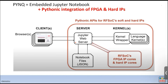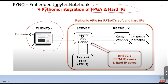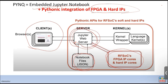At a high level, PYNQ combines Jupyter Notebook and Python integration with FPGA — meaning FPGA IPs or accelerators are manipulated using Python language. You use a browser as a remote client, and through Ethernet you talk to the Jupyter web server. The web server combines notebook JSON files and all FPGA IPs, which become Python packages or libraries.